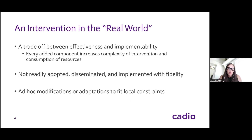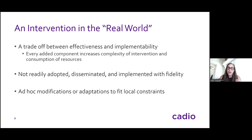Let's step back and think about what happens when we take an intervention and implement it into the real world. Oftentimes we almost immediately need to make a trade-off between effectiveness and implementability. Every component that we've added increases the complexity to implement the program and consumes a high amount of resources. For that reason, when disseminated and implemented in the real world, there's a lot of post-hoc adaptations to the program, or providers say they don't like a component and won't do it — a lot of tweaking that goes against the evidence base.